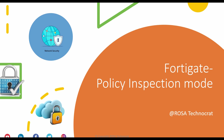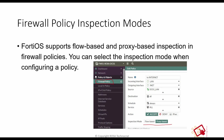FortiGate firewall supports two types of firewall policy inspection modes. The first one is called flow-based mode and the second one is called proxy-based mode or proxy-based inspection. FortiOS supports flow-based and proxy-based inspection in firewall policies, and you can select the inspection mode when configuring a policy. If you go to firewall policy and edit a policy, you can see the inspection mode option — it can be either flow-based or proxy-based.